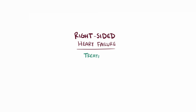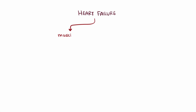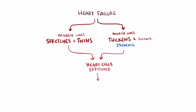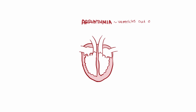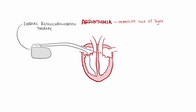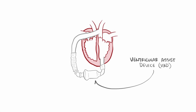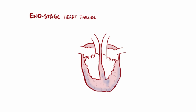Right-sided heart failure is treated similarly to left-sided heart failure — especially since it's often a result of it — with medications like ACE inhibitors and diuretics. In heart failure, the muscle wall can stretch and thin out or thicken and become ischemic, irritating heart cells and leading to arrhythmias that make the ventricles less able to pump blood. Some patients may be prescribed cardiac resynchronization therapy pacemakers to stimulate the ventricles to contract simultaneously. Alternatively, ventricular assist devices, or VADs, can be implanted to help the heart pump blood. In end-stage situations where other treatments have failed, patients might have a heart transplant.